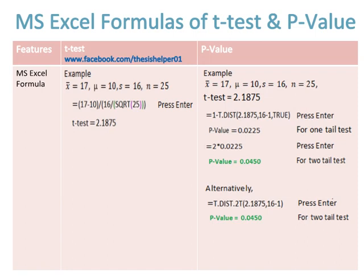is 0.0450 (written in green color). Hence, both formulas give the same results of p-value of t-test.